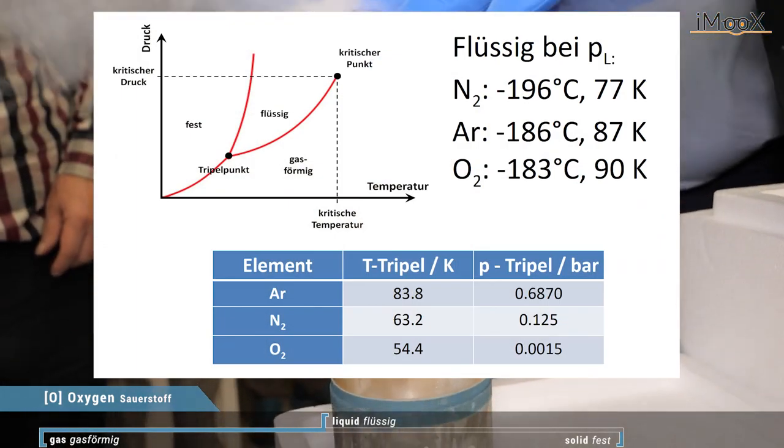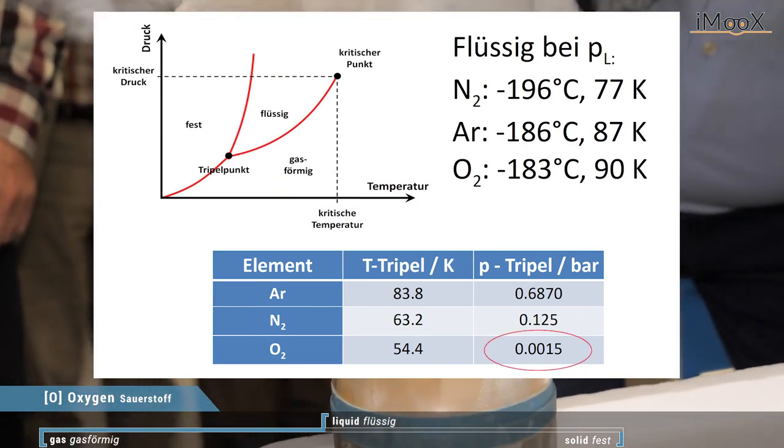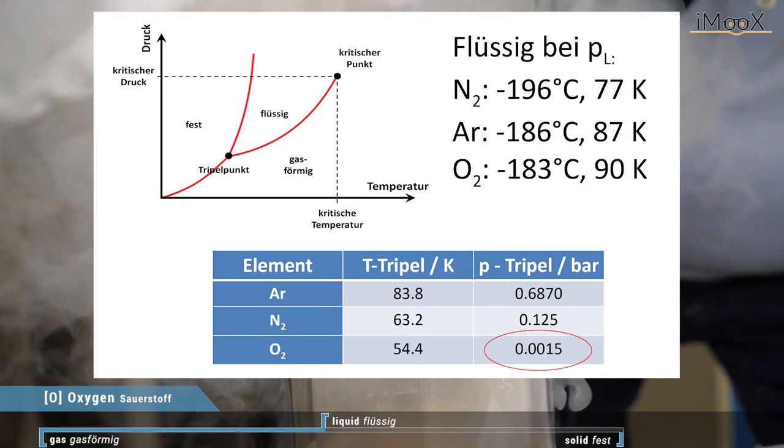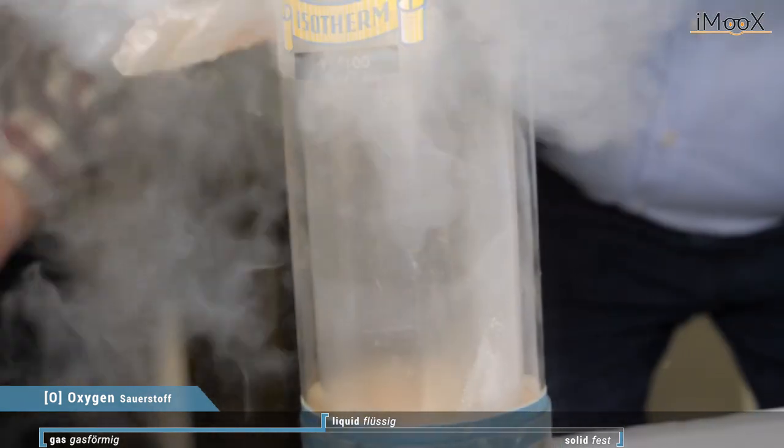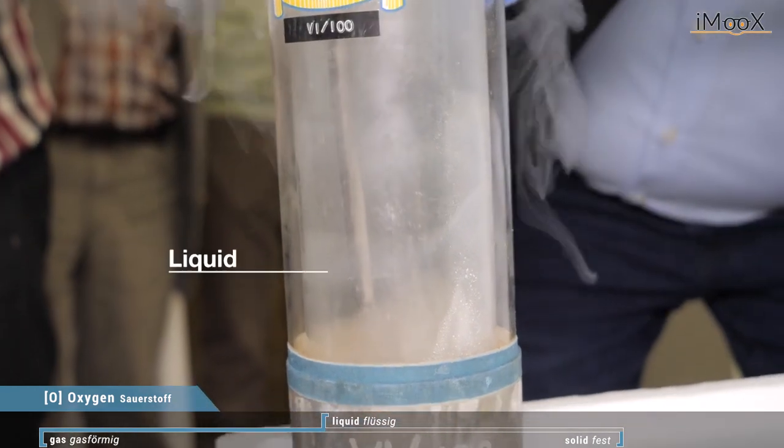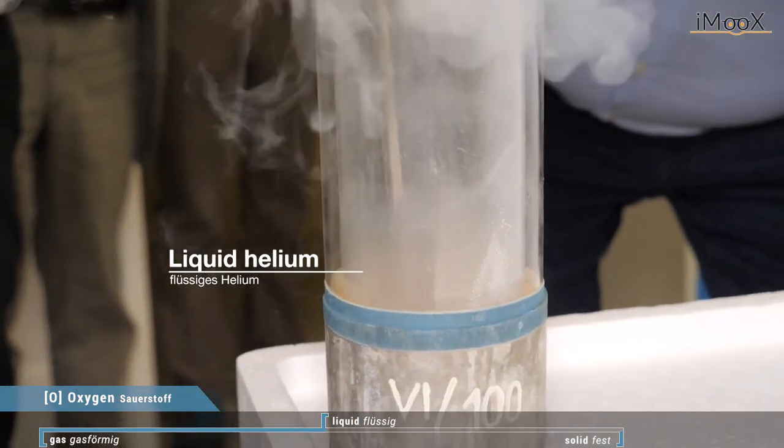We do that because we cannot do the trick with the triple point because the pressure we need there is only one millibar, we don't reach that. So we have to go another way and the way is to freeze the liquid oxygen in liquid helium.